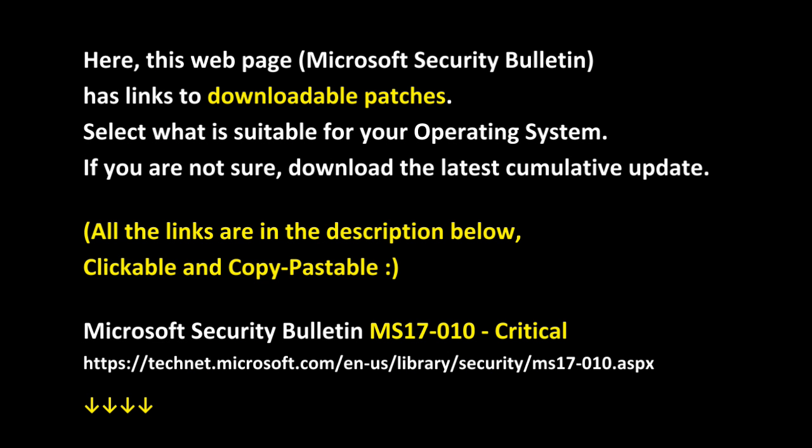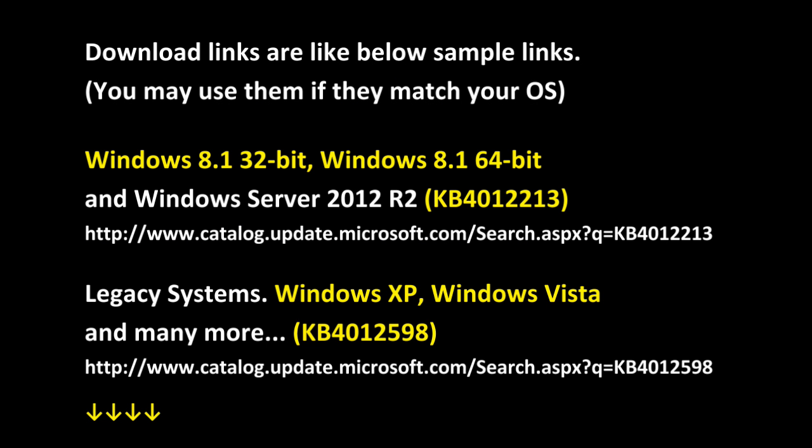This web page — the Microsoft Security Bulletin — has links to downloadable patches. Select what is suitable for your operating system. If you are not sure, download the latest cumulative update. All the links are in the description below, clickable and copy-pastable. Microsoft Security Bulletin MS17-010, critical. Download links are like the sample links shown; you may use them if they match your OS.